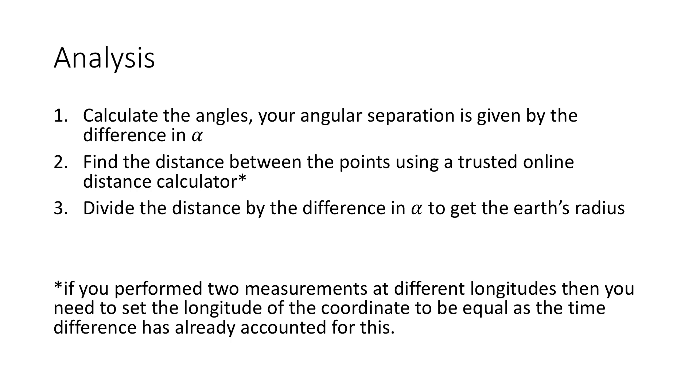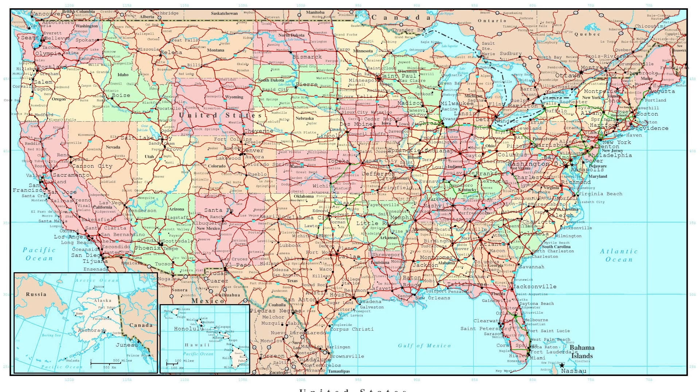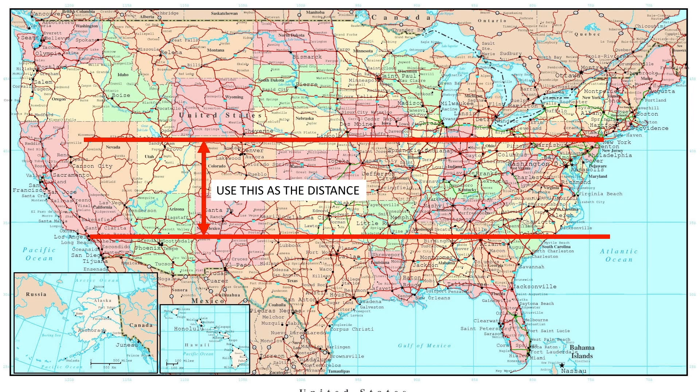Note that if the two measurements were taken at different longitudes, you need to set the longitude component of the coordinates to be equal or just set them to zero. The time difference already accounts for this longitudinal component. For example, if you take a measurement in New York and a measurement in LA, you are only interested in the lateral separation.